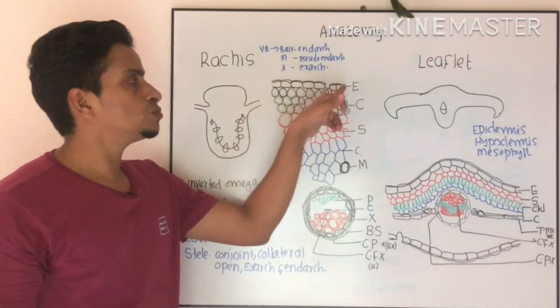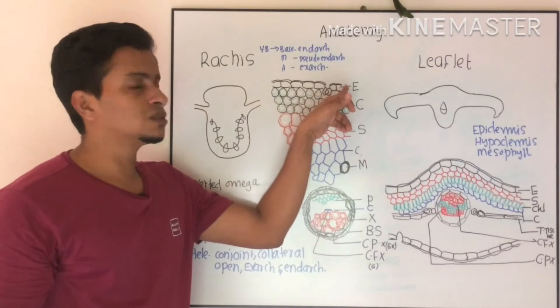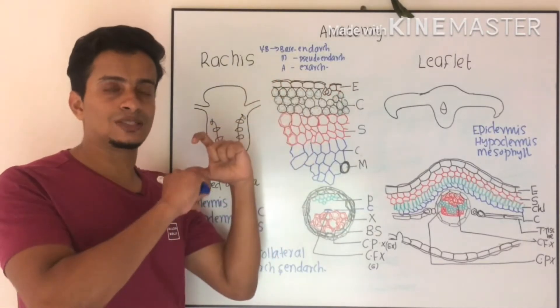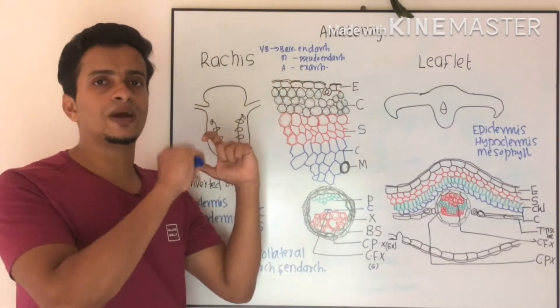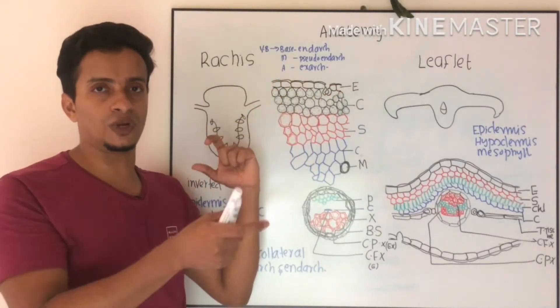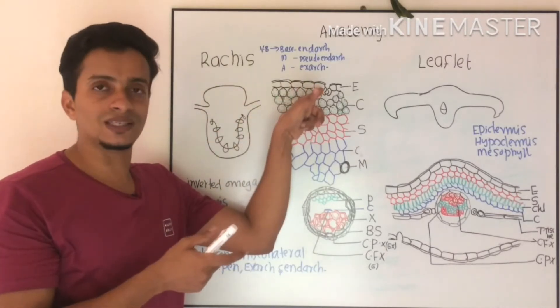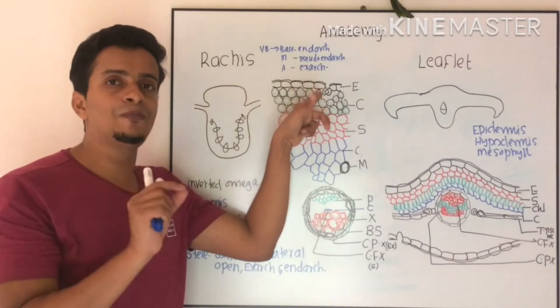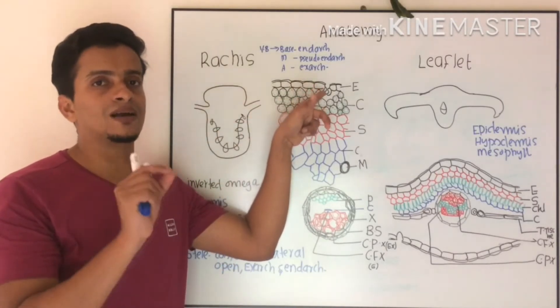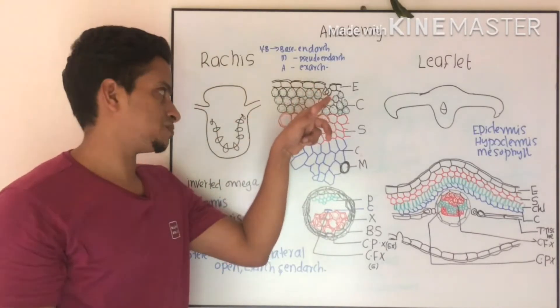This is the epidermis, which is well protected by a thick cuticle. And you can see deeply sunken stomata.